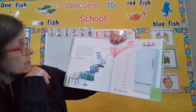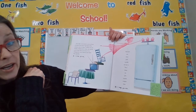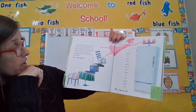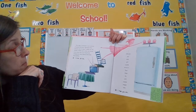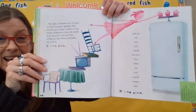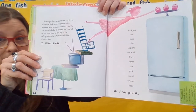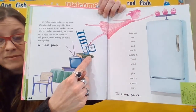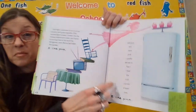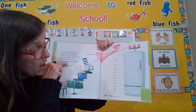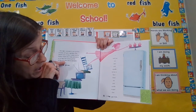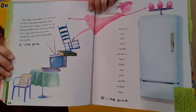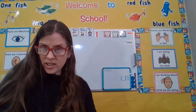That night, I pretended to eat my dinner of mushy dark green vegetables. After everyone went to sleep, I sneaked into the kitchen, climbed onto a chair, and reached on my tippy toes to the top of the refrigerator where Mommy had hidden the cupcakes. She likes pink — but is she being safe? No, she is not being safe. I took just one more cupcake and ate it. Then I licked the pink cupcake wrapper clean. I like pink. She licked that wrapper — wait until you see what happened.